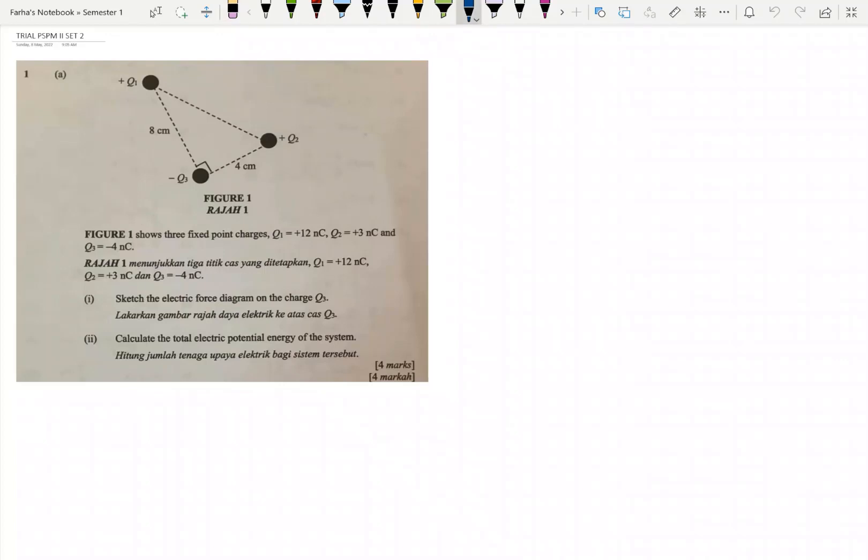Now we focus on charge Q3. The force acting on Q3 due to Q1 is attractive because Q1 and Q3 have opposite signs. This is F31. The force acting on charge Q3 due to charge Q2 is also attractive because Q2 and Q3 have opposite signs. Therefore the direction of F32 is like this. F32 and this one is F31. This is for A1.